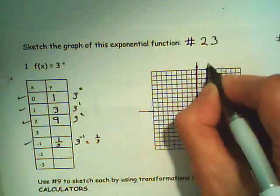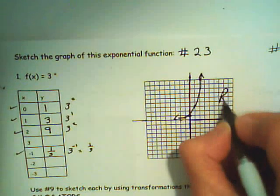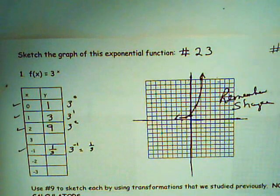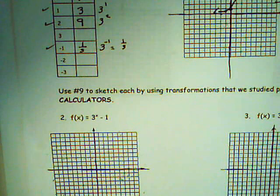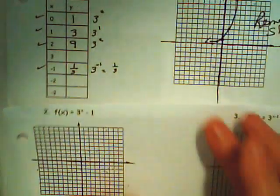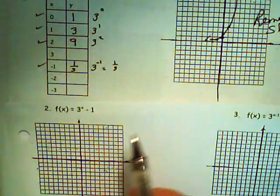Watch this sketch and remember this shape, because that's what you're going to be looking at as you do this assignment. Without the use of a calculator, thinking back to sections 1.7 and our work with parabolas, we're going to be remembering the shape and using transformations. All of these problems are going to be based on this original function, 3 to the x.